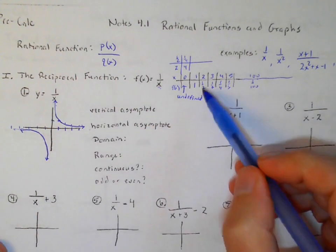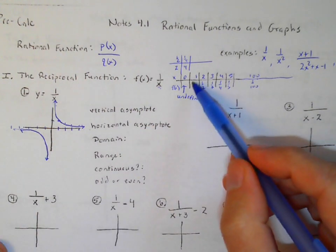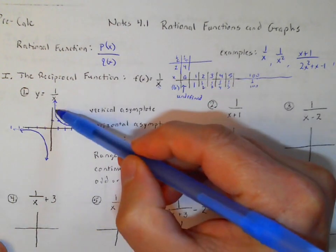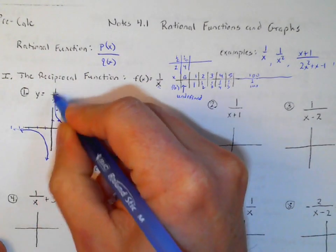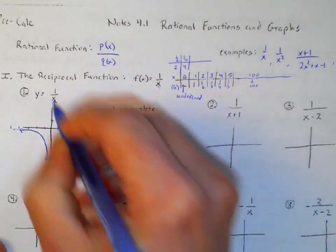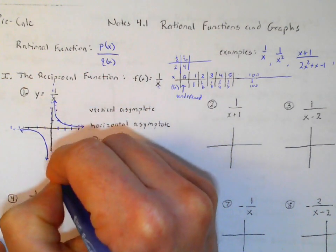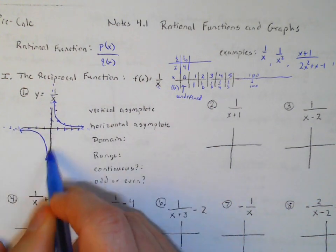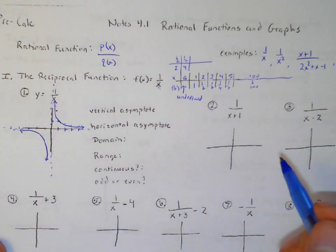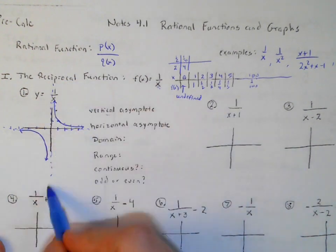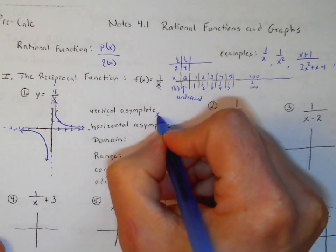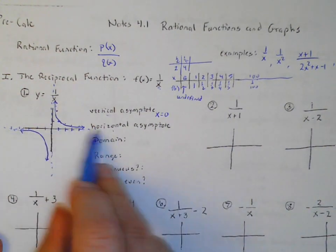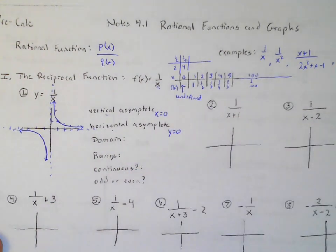We have these imaginary asymptotes — imaginary lines where the graph keeps getting closer and closer but never actually touches. Our vertical asymptote here is at the line x equals zero, and our horizontal asymptote is at the line y equals zero.